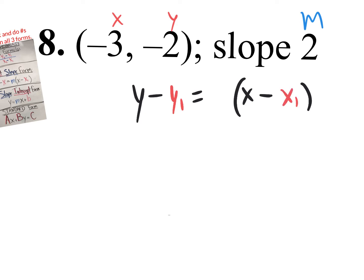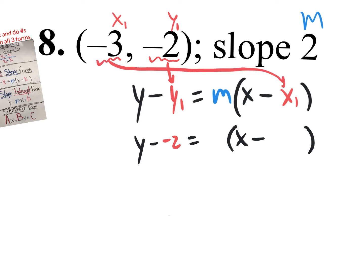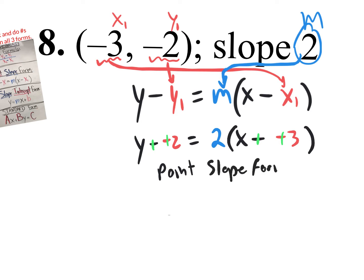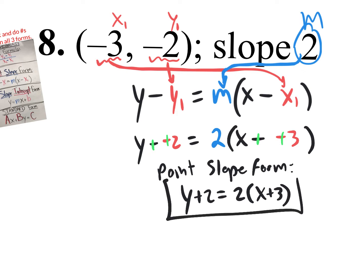That is y minus y1 equals m parenthesis x minus x1. I wrote what was in black first — that's what I always do. I write it with blank spots: y minus blank spot equals blank spot parenthesis x minus blank spot. Then I simply plug in my y1 value of negative 2 right here, plug in my x1 value of negative 3 over here, and plug in my m value of 2 right in there. Ladies and gentlemen, this is our point-slope form equation. We just change those minus-minuses to plus-plus: y plus 2 equals 2 parenthesis x plus 3. That is one of the forms — the easiest form to use if they give you a point and a slope.